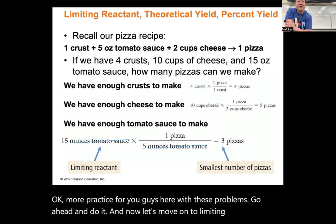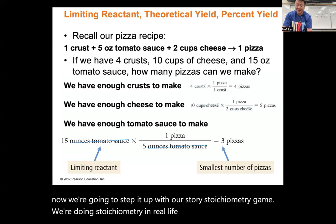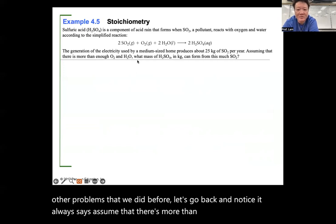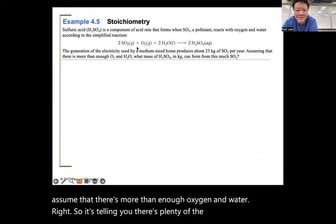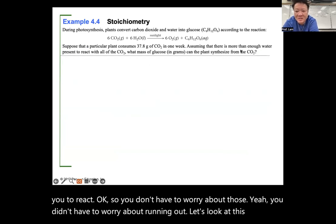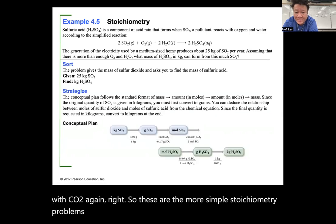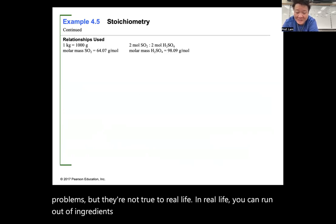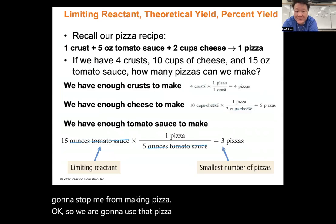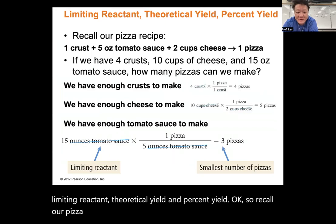Now we step up to limiting reactants — stoichiometry in real life. In all previous problems it said 'assume more than enough' of the other reagent. In real life you can run out of ingredients. We'll use the pizza analogy: recipe is 1 crust + 5 oz tomato sauce + 2 cups cheese = 1 pizza. You have 4 crusts, 10 cups of cheese, 15 oz tomato sauce — how many pizzas can you actually make?